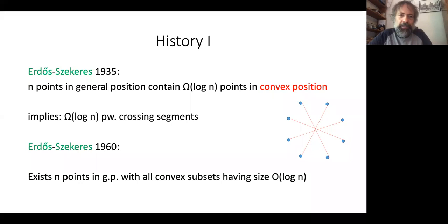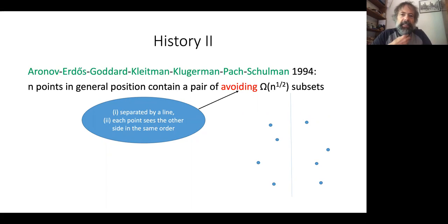That gives a lower bound: you can always find log n pairwise crossing segments. It's a low lower bound, but it's also essentially tight — Erdős and Szekeres later gave a construction of n points where the maximum convex subset has only logarithmic size. There was a factor-of-two gap between their lower and upper bounds, recently nearly closed by Andrew Suk, but the order of magnitude is log n.